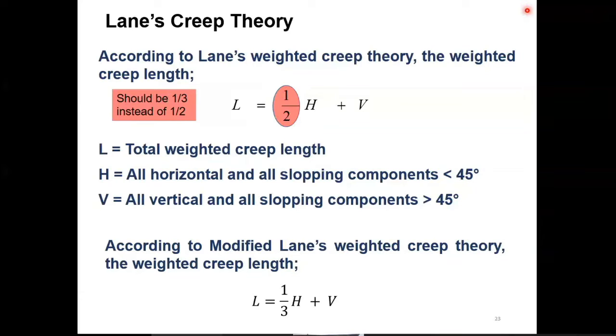One is the uplift pressure and second is the undermining or piping. So these theories, all these three theories - maybe Blythe theory, Lane theory and the Khosla theory - they gave us how to compute the uplift pressures accurately and what is the solution to control the undermining or piping. That basically we have discussed.